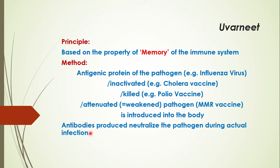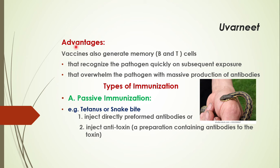Vaccines also generate memory cells — B cells and T cells. There are two major advantages: first, they recognize the pathogen quickly on subsequent exposure to the same disease. Second, they overwhelm the pathogen with a massive production of antibodies. For example, if only 10 molecules of pathogen enter the body, the body can produce thousands of antibodies — so all pathogens are killed within a very short duration, and the vaccinated person remains free from infection.